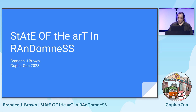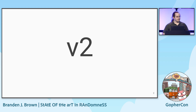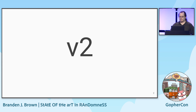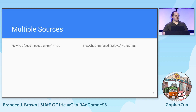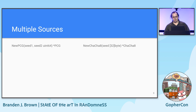Hi, I'm Brandon. I'm going to talk about random stuff. We're probably getting our first v2 packages in the standard library here soon. I'm sure everyone's as excited as I am that it'll be math/rand v2. Not much is changing with the new API, but one thing that is changing is we will have multiple source implementations — where before you just called new source, you'll now have multiple options to choose from.